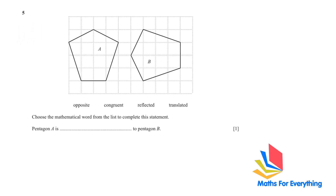Question 5: we have been given two shapes — both pentagons A and B. Choose the mathematical word from the list to complete the statement: Pentagon A is — opposite, congruent, reflected, or translated? This is not opposite, and you can clearly see it is not reflected either. It is congruent — all the sides are equal.